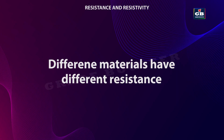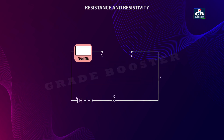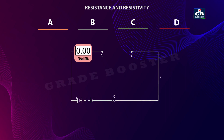Different materials have different resistance. Here is a broken circuit. Let us close this circuit with different types of materials and check the amount of current flow in each case with the help of an ammeter. Let us close this circuit with wire A and note down the readings on the ammeter. Now change wire A with wire B. In the case of wire B, less current passes compared to wire A, as observed on the ammeter.